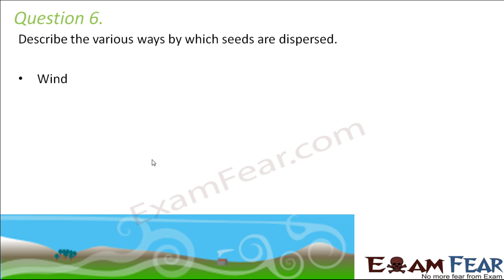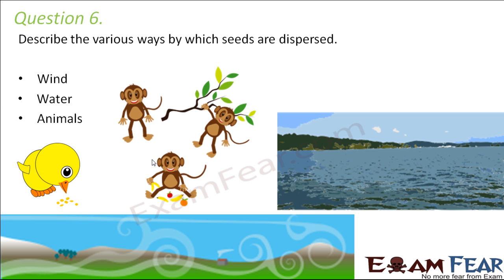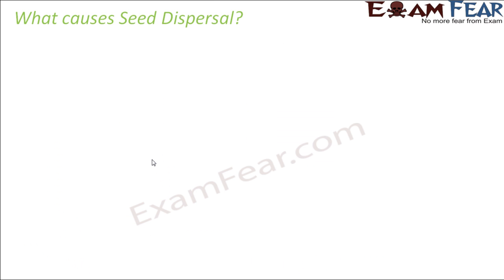wind, which can carry away lightweight seeds. It can also happen through water. Animals can also carry seeds from one place to another, either through their beak or through their toes. Sometimes seeds get stuck to the toes of animals. In fact, some animals while eating fruits just throw the seeds away here and there — so that's how animals can also help in seed dispersal.